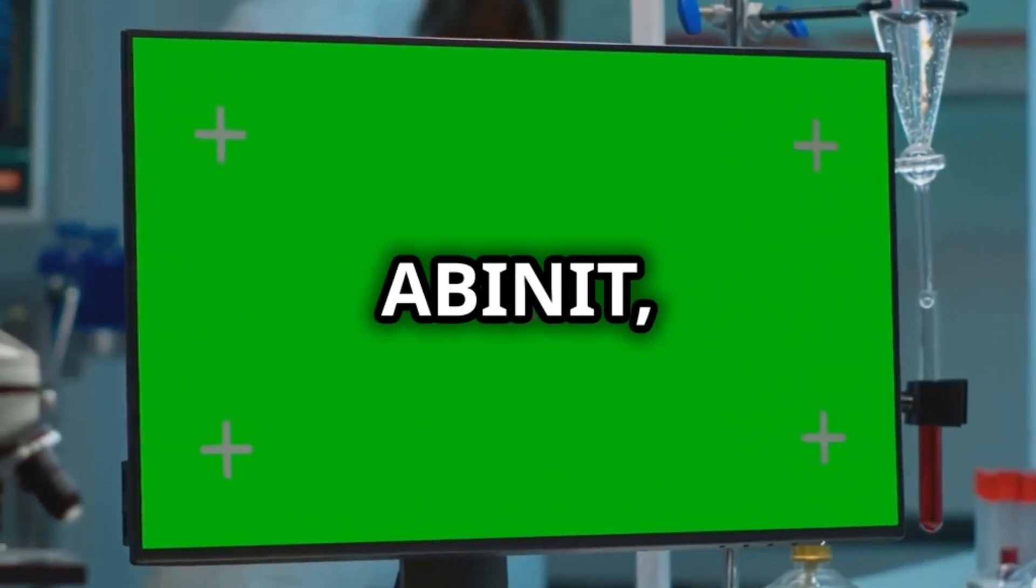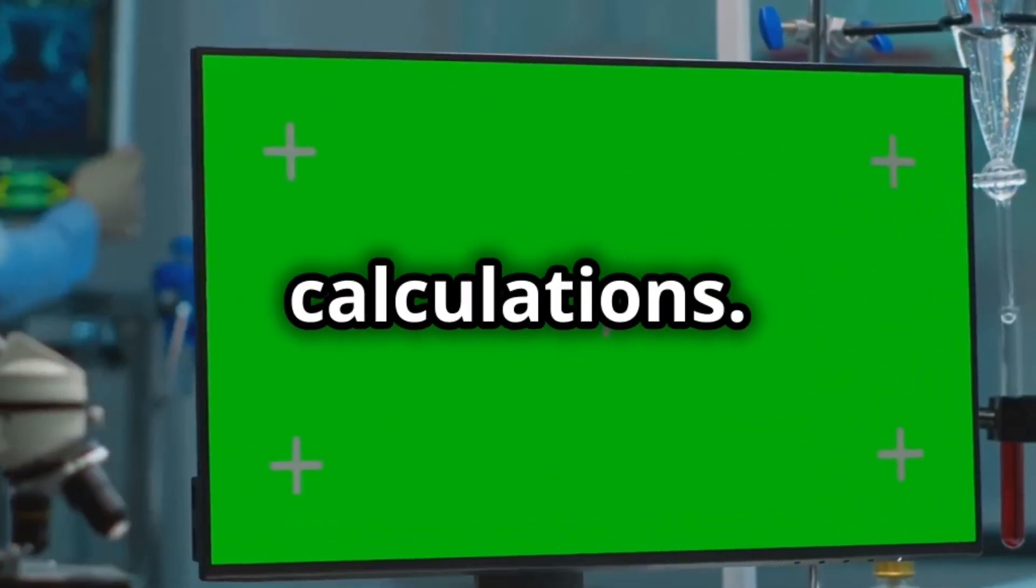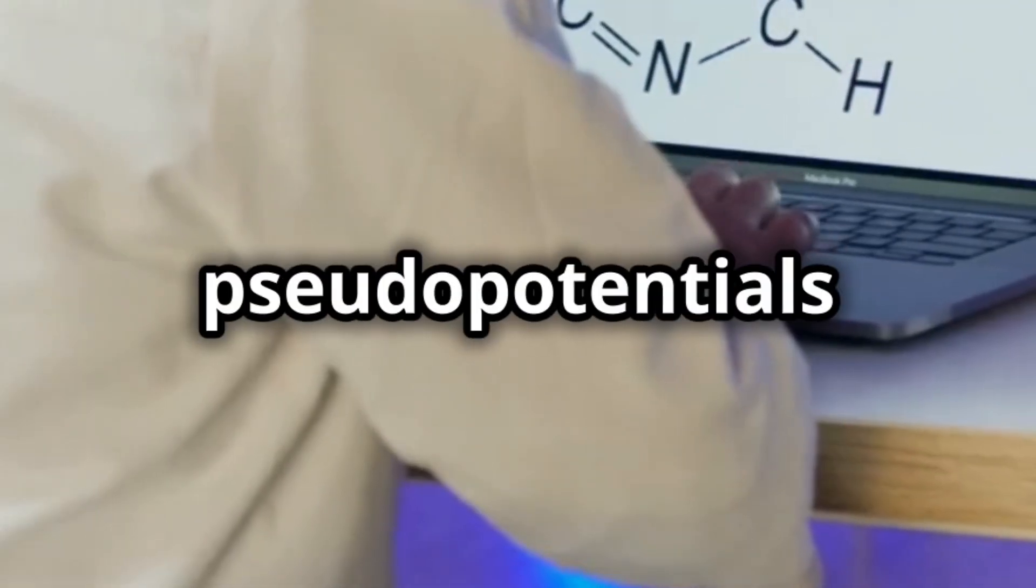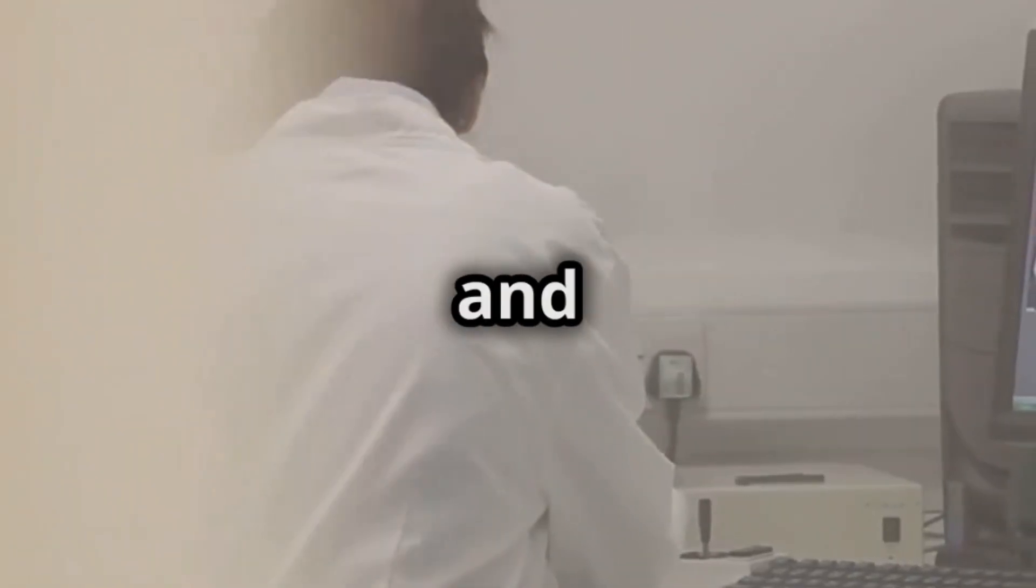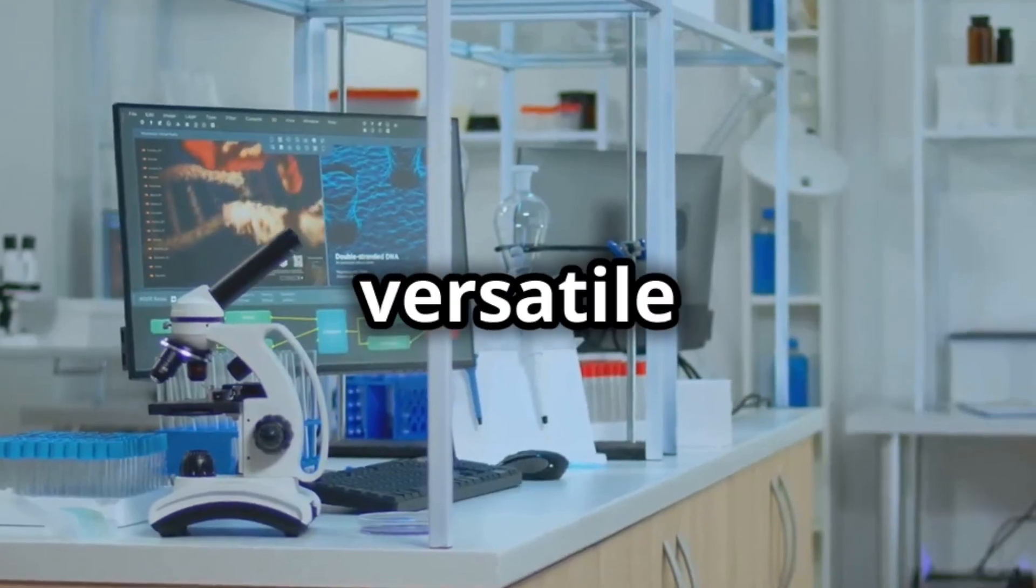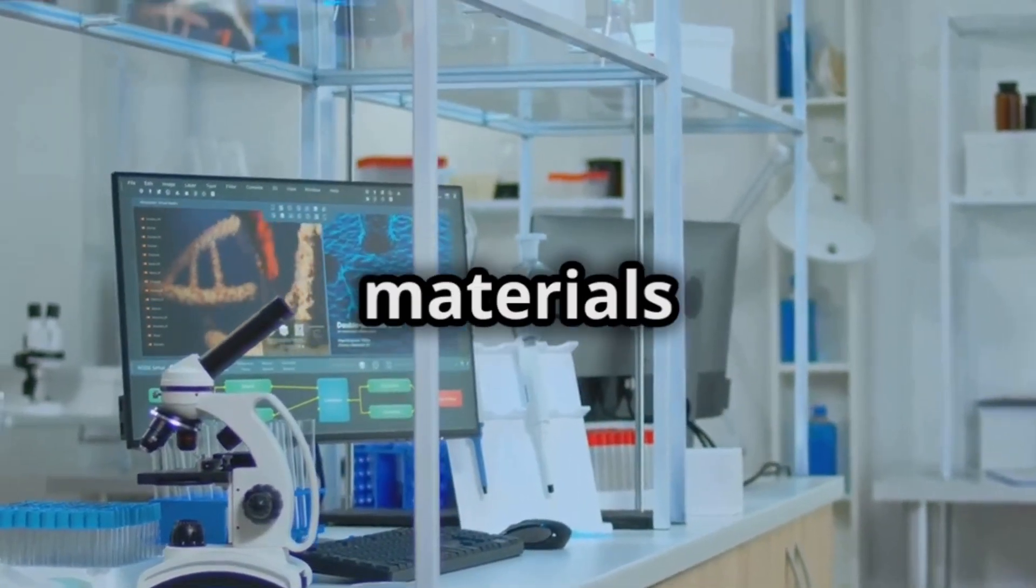Next we have ABINIT, a staple in electronic structure calculations. It uses pseudopotentials and plane wave basis sets for density functional theory calculations. ABINIT also studies phonons, electric field responses, and quantum transport. It's a versatile tool for condensed matter physics and materials science.